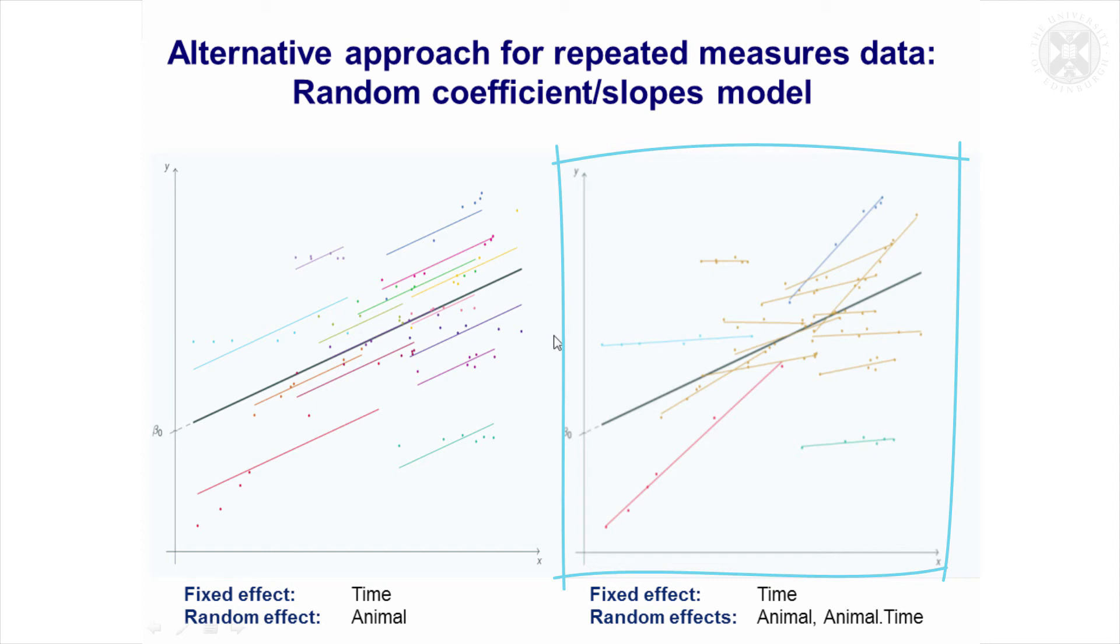In fact, this solid line is the overall slope effect. Rather than assuming that all these observations are independent around it, it takes into account they've come from different animals and each animal has its own slope which is going to vary randomly around the overall average slope.